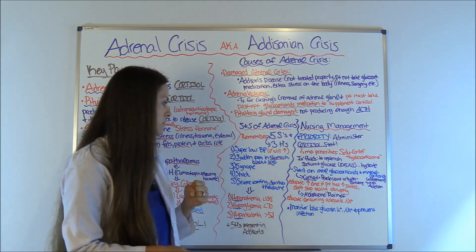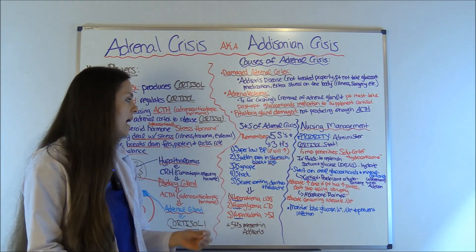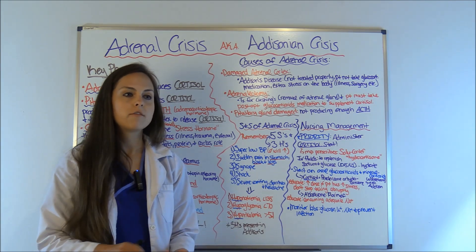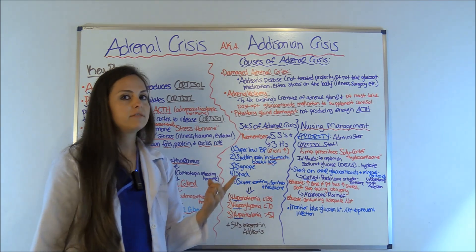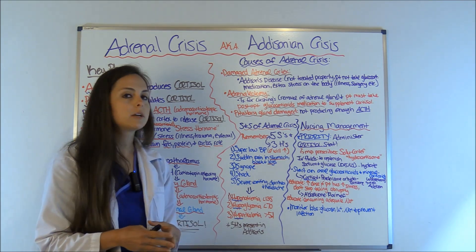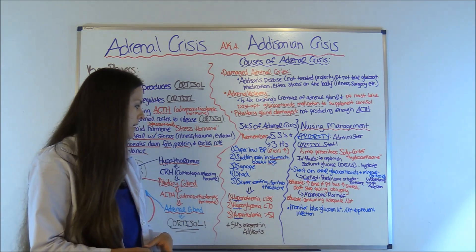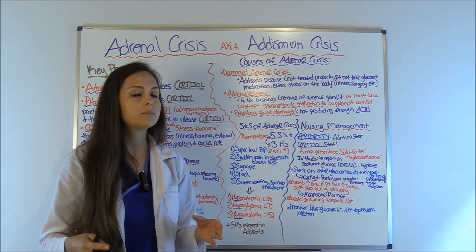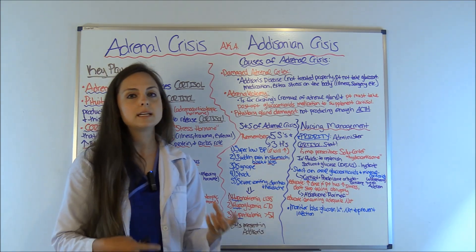To help you remember the signs and symptoms of adrenal crisis, remember the five S's. Number one — super low blood pressure, and nothing will bring it up: no fluids, no vasopressors, nothing. That is a red flag for adrenal crisis. Number two — sudden pain in the stomach, back, and legs. Third S — syncope. Fourth S — shock: the patient is in vascular collapse, blood pressure is low, they're dehydrated, and it is life-threatening and must be treated immediately. Fifth S — severe vomiting, diarrhea, and headache.